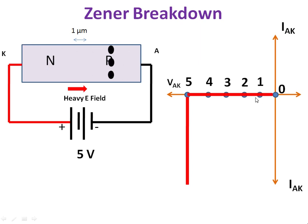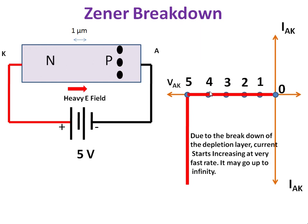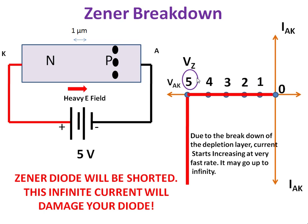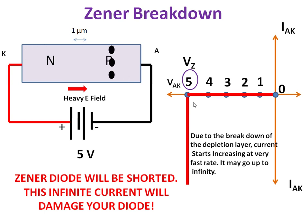At 1 volt the current is 0, at 2 volts current is 0, at 3 volts current is 0, at 4 volts current is 0. But the moment the voltage reaches 5 volts — the breakdown voltage VZ — the current starts increasing from 0 to infinity.